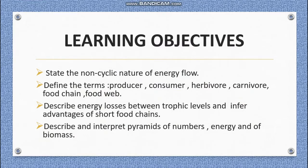By the end of this video, you should be able to state the non-cyclic nature of energy flow, define the terms producer, consumer, herbivore, carnivore, food chain and food web, describe energy losses between trophic levels, and infer advantages of shorter food chains. You should also be able to describe and interpret pyramids of number, pyramids of energy, and pyramids of biomass.